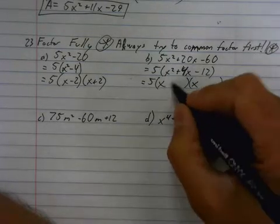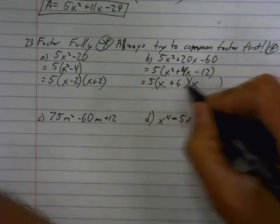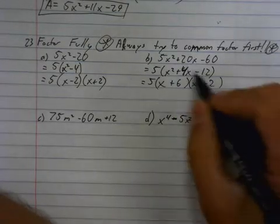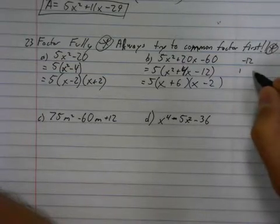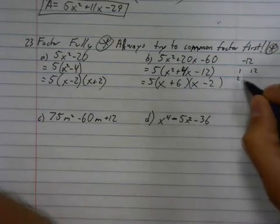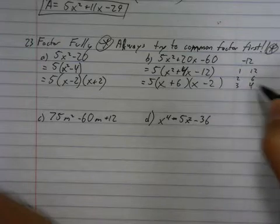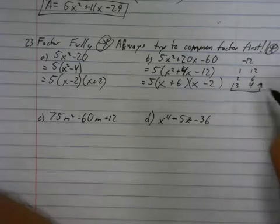And I need plus 6 minus 2. Now, if you didn't follow that, remember that the long way is you take this negative 12. You find all your factor pairs. 1 and 12, 2 and 6, 3 and 4. And then I'm done because I'm going up the other side.